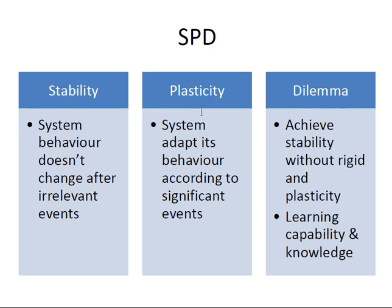Plasticity talks about the system adapting its behavior according to significant events. The model created based on trained inputs should be dynamic — whenever the input is changing or the database has variations, the system should be able to recognize the change. The system adapts its behavior according to significant events; that is known as plasticity, that is dynamism.